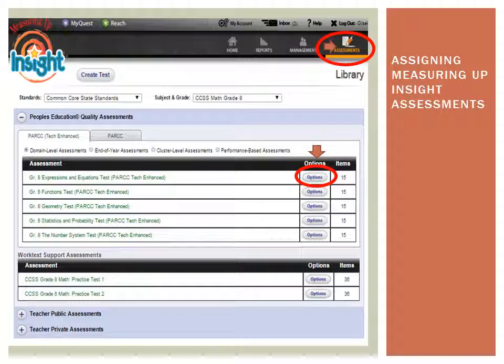To assign an assessment, begin by first selecting the Assessments tab and then choosing the standards and subject's grade level from the drop-down menus. Hover over the Options button to the right of the assessment title. Click the Assign link.